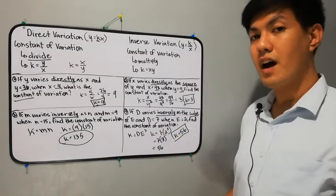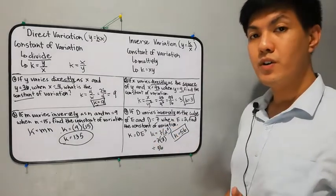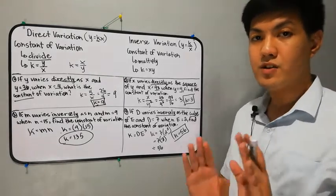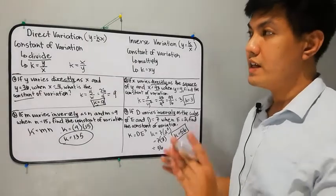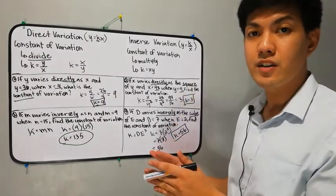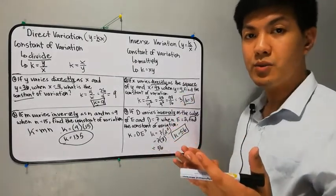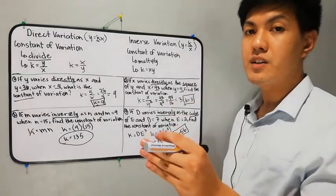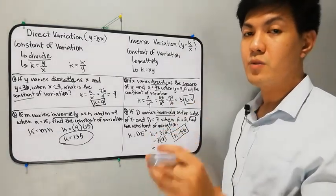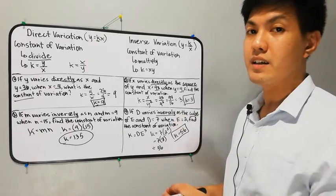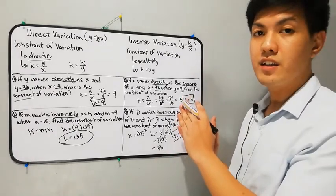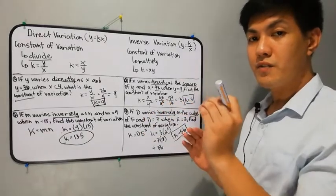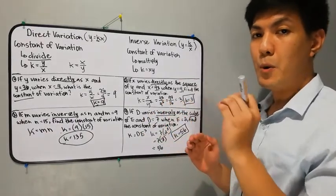That is how we compute the constant of variation. A short recap: if the given is direct variation and we're looking for the constant, we divide. For inverse variation, looking for the constant, we multiply. Don't forget that.